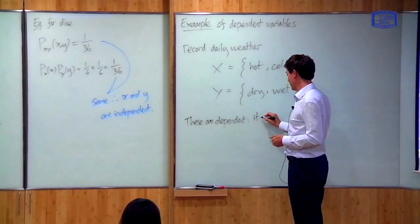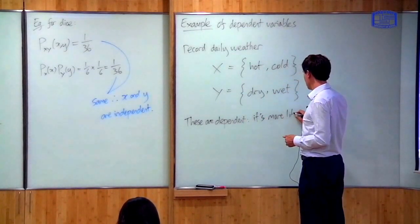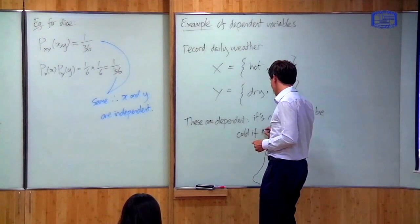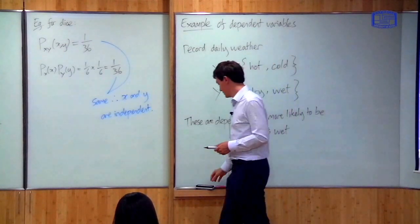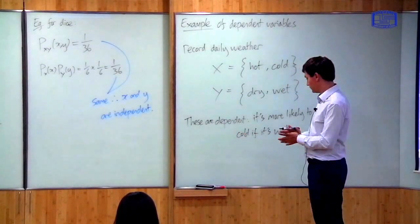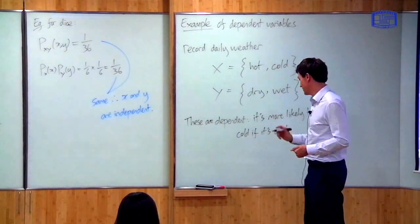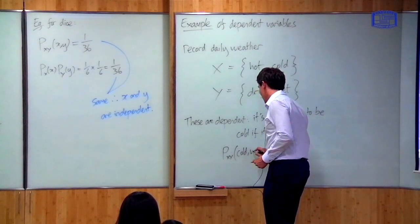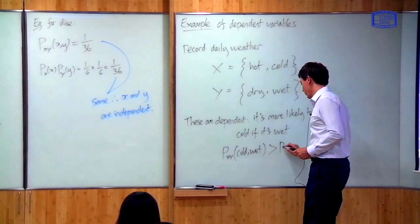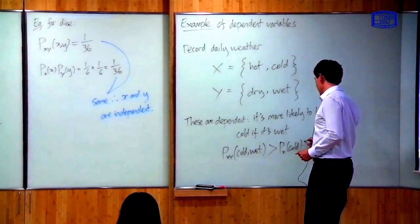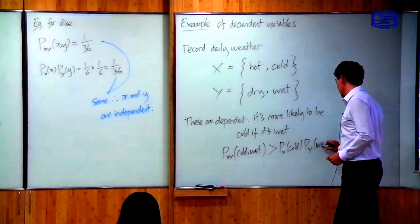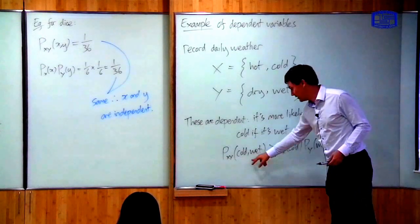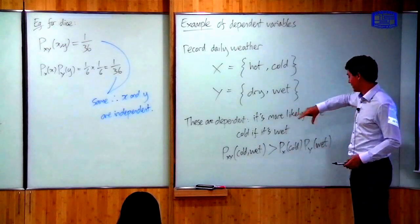We can write this as an equation: the probability of it being cold and wet is greater than just the probability of it being cold multiplied by the probability of it being wet. It's more likely to be cold and wet than the product of the individual probabilities. This is what it means for two things to be dependent.